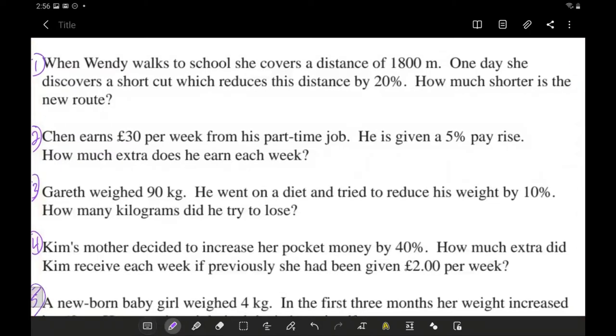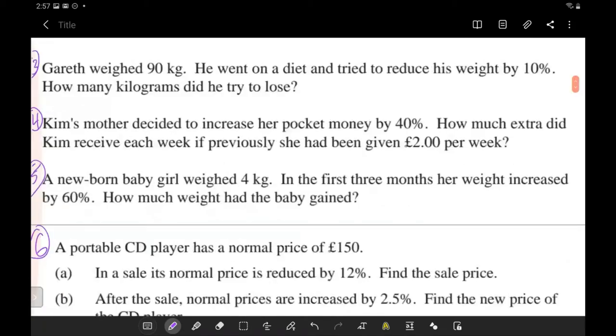Number one tells us when Wendy walks to school she covers a distance of 1800 meters. One day she discovers a shortcut which reduces this distance by 20 percent. How much shorter is the new route? You can think of this as a loss of distance. The original distance is 1800 meters and we have a 20 percent loss.